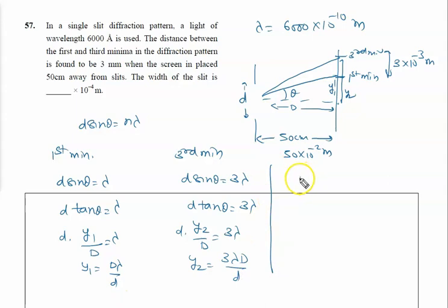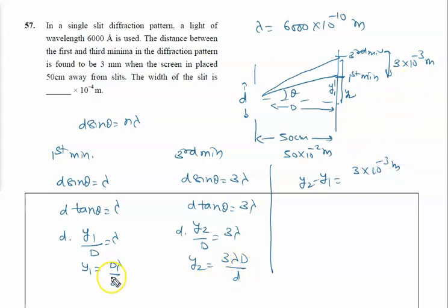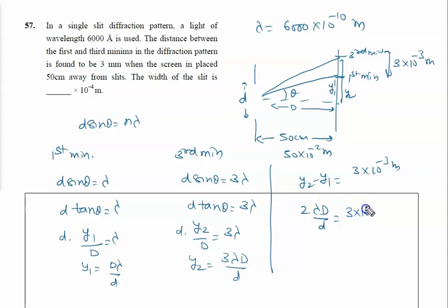Now, y2 − y1 is given as 3 × 10⁻³ meter. Since y2 = 3λD/d and y1 = λD/d, we get y2 − y1 = 2λD/d = 3 × 10⁻³ meter.